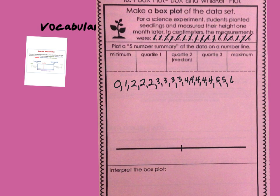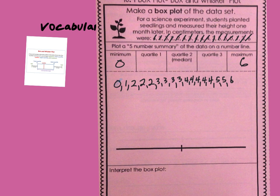Now we know our minimum is 0 and our maximum is 6. We have 17 numbers total, so we work our way to the middle. Crossing off from both ends, we land on 3 as our median. So our median is 3.